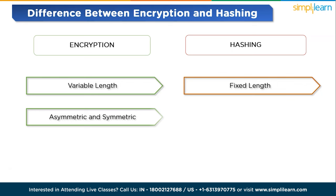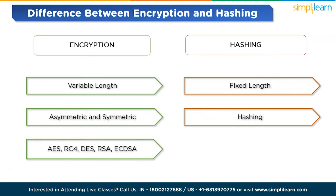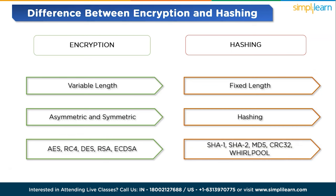Regarding types: encryption has asymmetric, symmetric and hybrid types, while hashing has its own hashing types. Regarding common algorithms: encryption uses AES, RC4, DES, RSA, and ECDSA, while hashing uses SHA-1, SHA-2, MD5, CRC32 and Whirlpool.